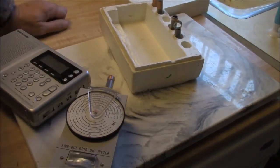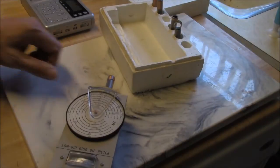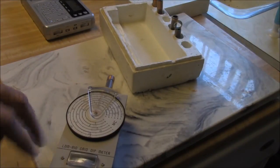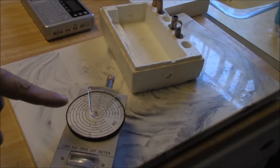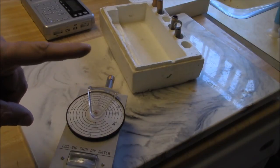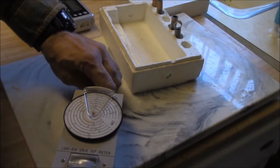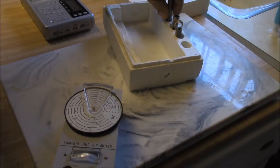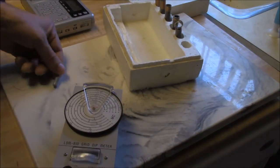There are a lot of different dip meters, everybody and their brother's got one. Some of the major ones are the Leader, the Heathkit, the Miller, the Boonton, and there's a couple other ones like the Eico. And I think MFJ makes a more modern one if you're into that sort of thing.